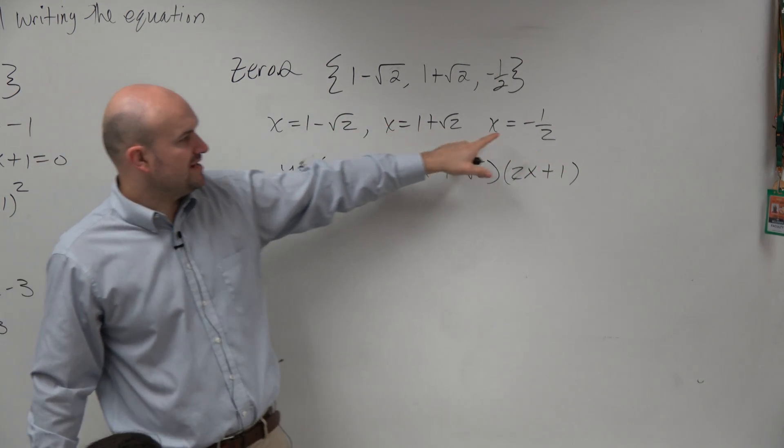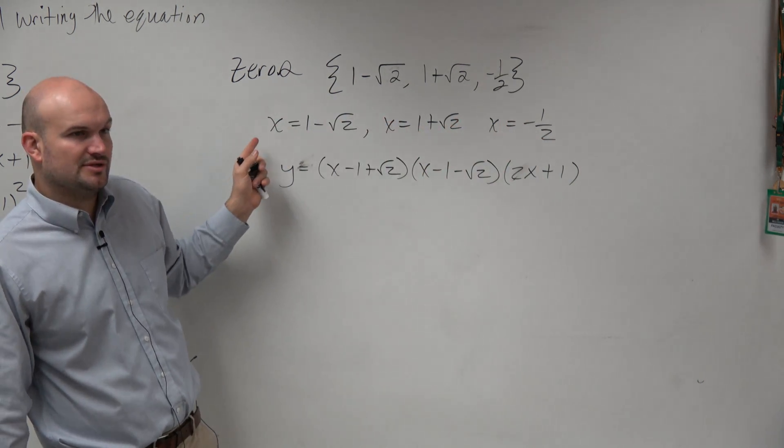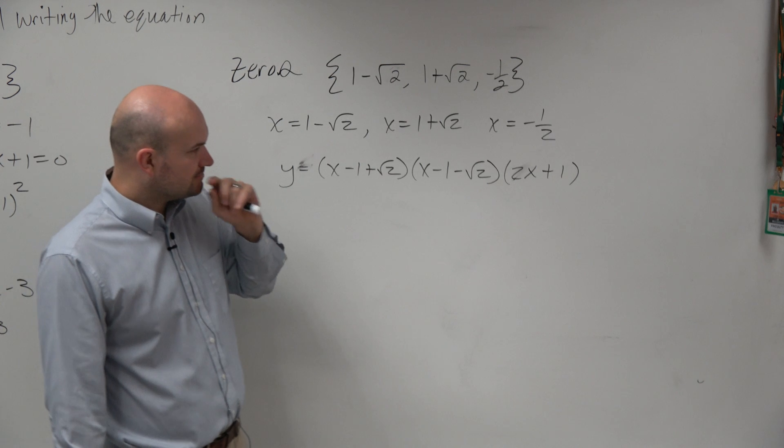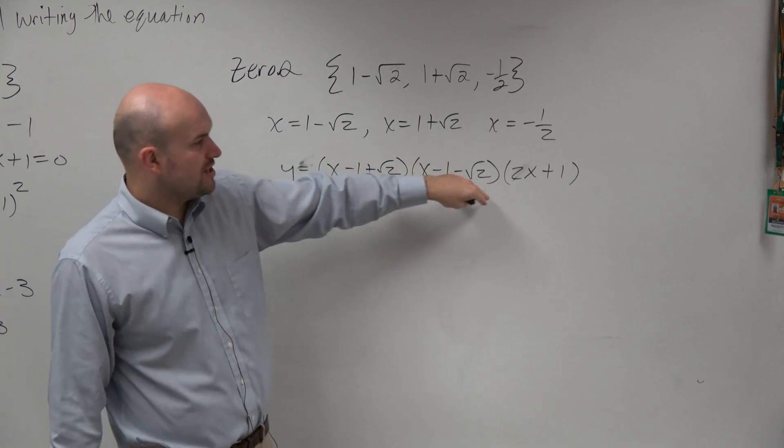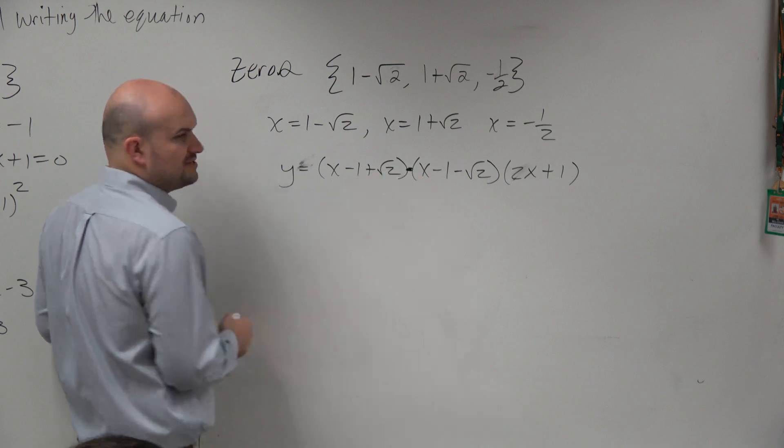And you guys can check my math, but basically multiply by 2, add 1, there. And then I just put all those terms to the other side. Now here we have trinomial times trinomial times binomial, so the preferred thing is just to pick 2 and just multiply them out.